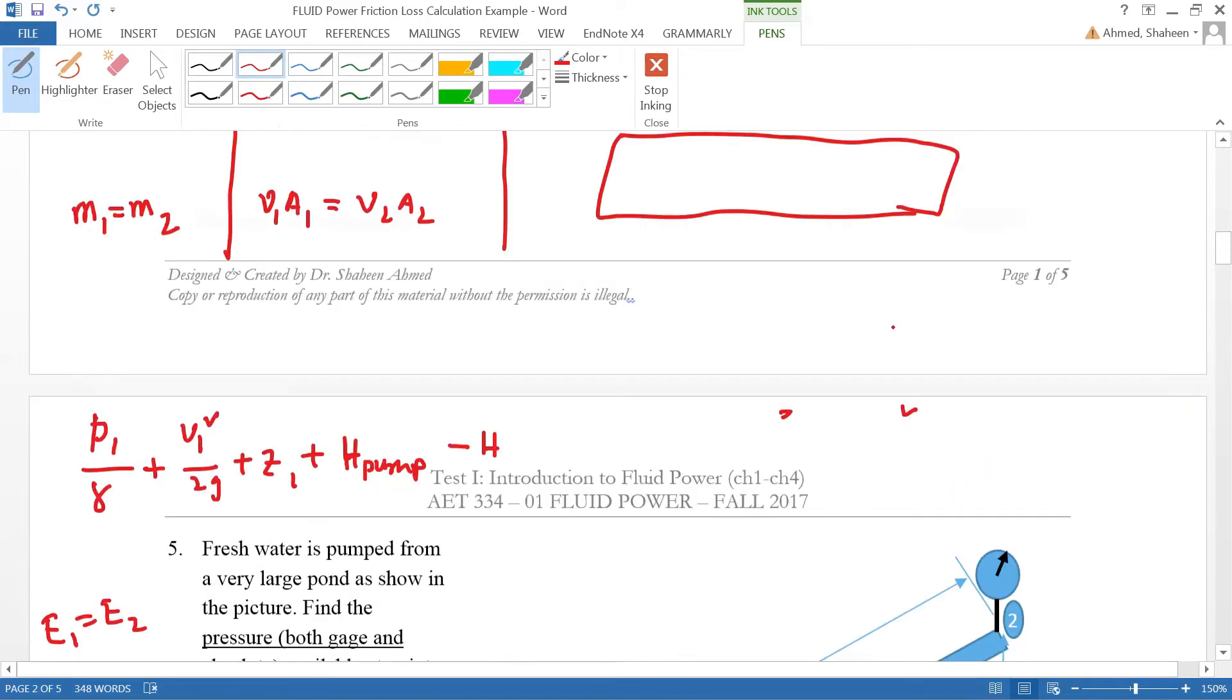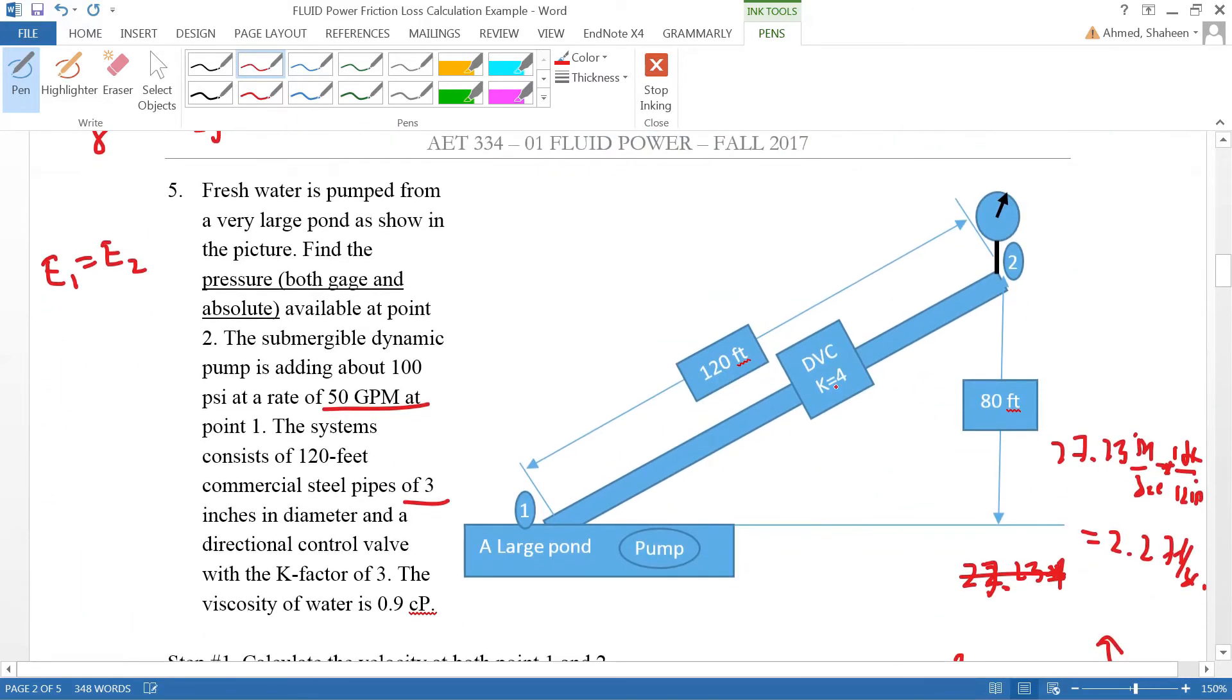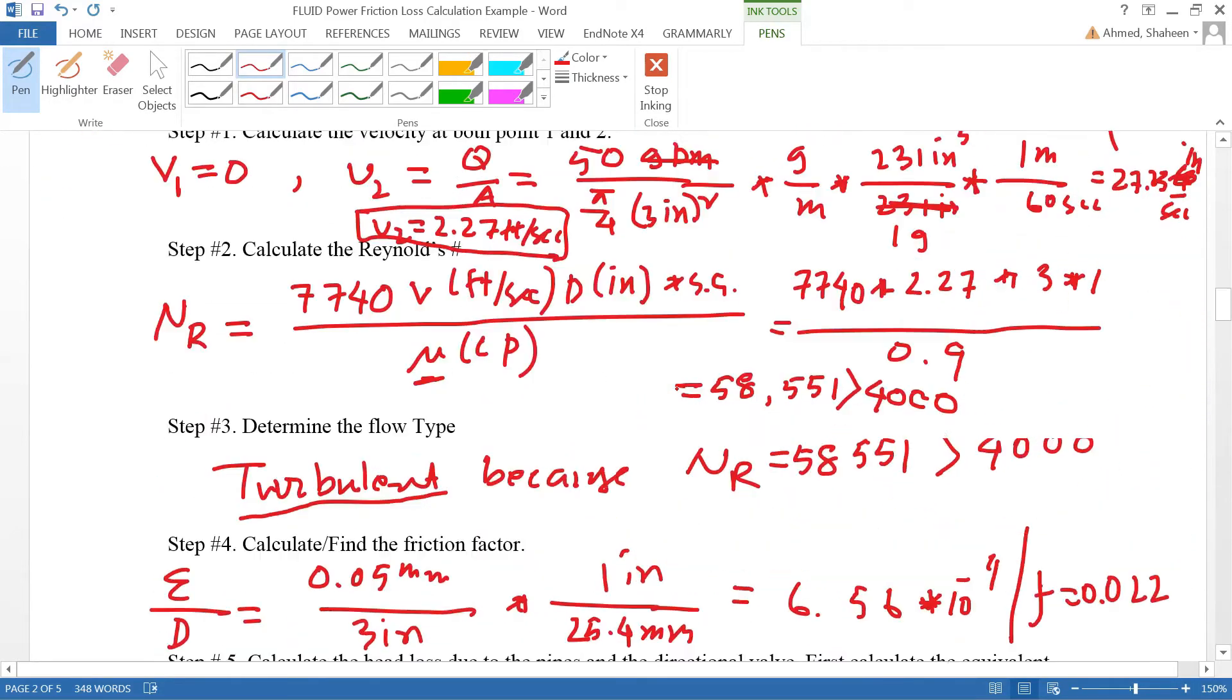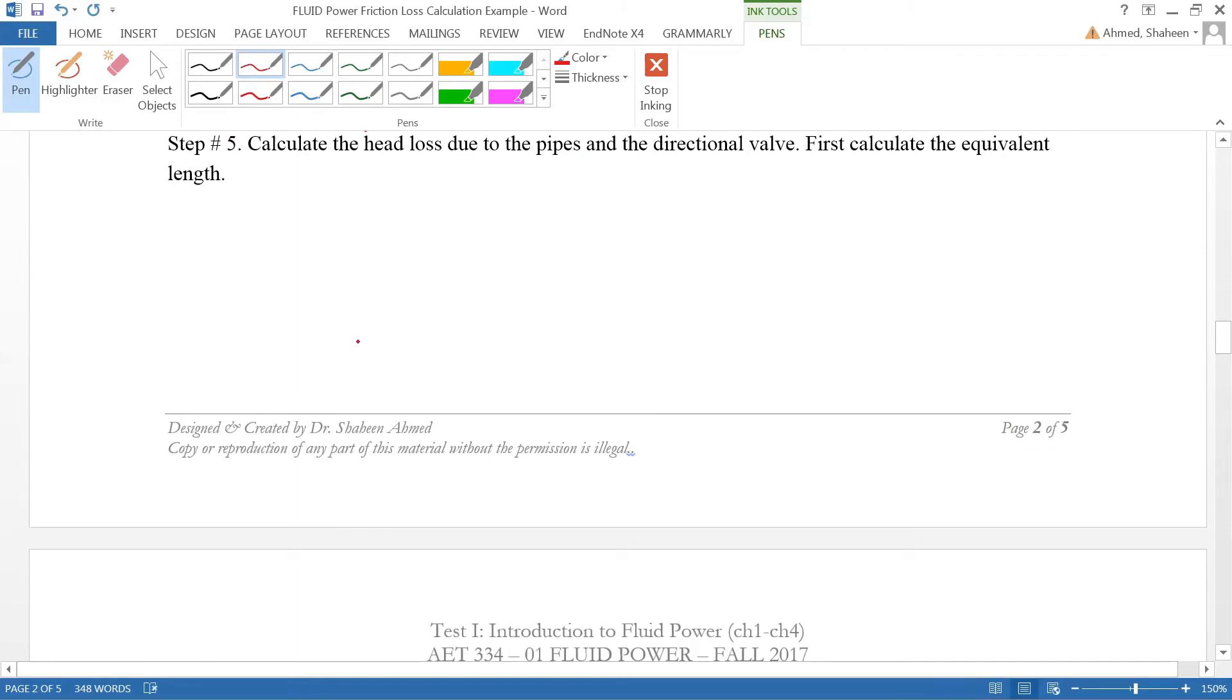called equivalent length. In this problem we have a four-way directional valve as an example - only one valve is added in the system. First thing we need to calculate is the equivalent length. The concept is: how much would a straight pipe lose that's equivalent to that fitting?